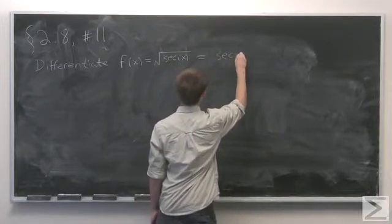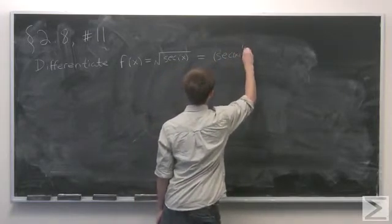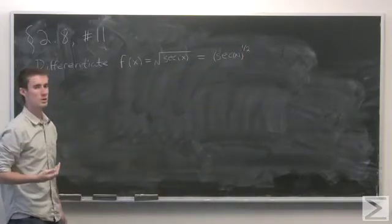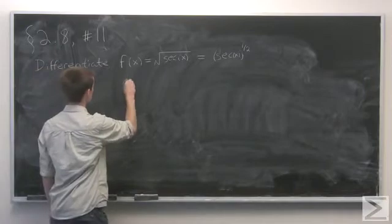So we'll have secant x to the 1 half power, which makes it a little bit easier to see now that we have application of the chain rule.